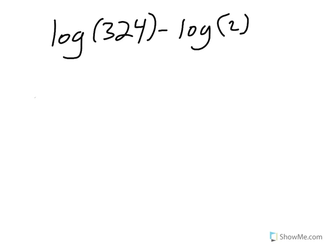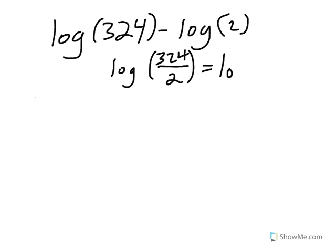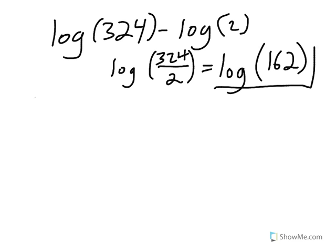We have one more step: since we have log(324) minus log(2), we can use the quotient property to condense this into one log of 324 divided by 2, which equals log(162). That is your final condensed answer. You could type it into the calculator for a decimal approximation, but that's not necessary.